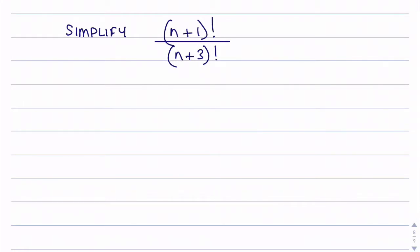In this question we're asked to simplify the following factorial expression. Now what I've noticed about this one is that the denominator is larger than the numerator, so the numerator I'll actually leave as it is, just n plus 1 factorial.